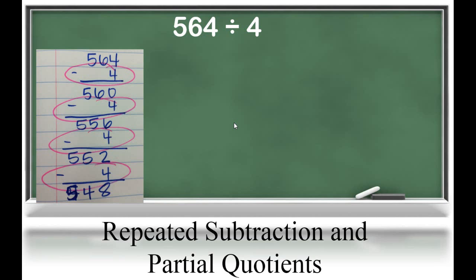We would start with 564 minus 4 is 560 and keep going until there's nothing left. Now, knowing from the last example, we know that we would have to subtract 141 times until we get to 0. Students will quickly see that this is not an efficient method of division, and it takes too long and leaves too much room for error.